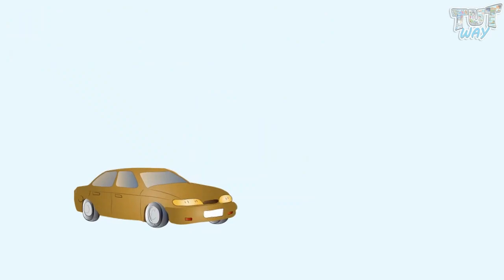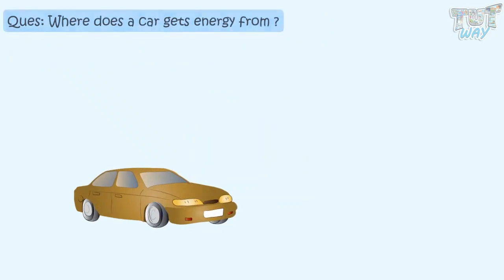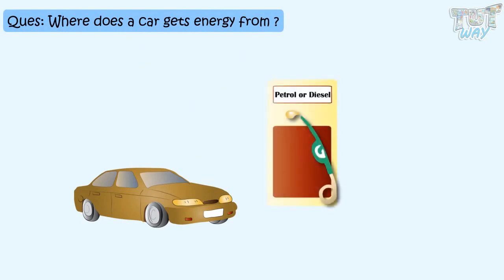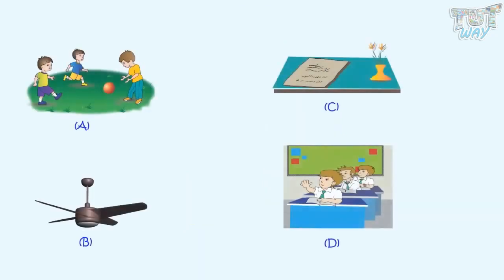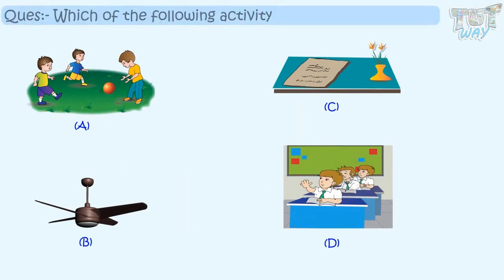This is a car — what does it need to run? What is the source of energy for it? Fuel — yes, fuel is the energy for cars. Now, four activities are shown. Which of the following activities does not need energy?